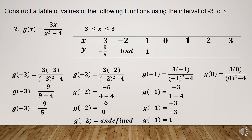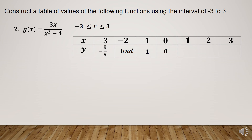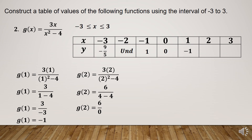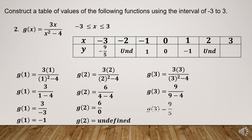If x is equal to 0, substitute and simplify: g of 0 is equal to 0. If x is equal to 1, substitute and simplify: g of 1 is equal to negative 1. If x is equal to 2, substitute and simplify: g of 2 is undefined, because the denominator is 0. If x is equal to 3, substitute and simplify: g of 3 is equal to 9 over 5.